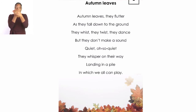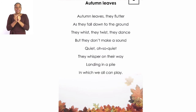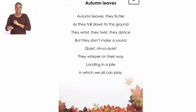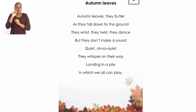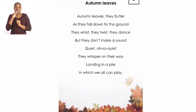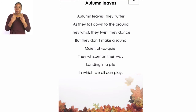The poem is called 'Autumn Leaves.' Autumn leaves, they flutter as they fall down to the ground. They whist and twist, they dance, but they don't make a sound. Quiet, oh so quiet, they whisper on their way, landing in a pile, in a pile, in a pile, in which we all can play. And that is our poem today.